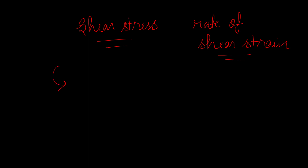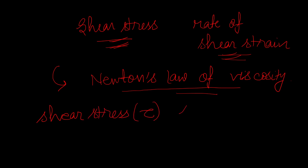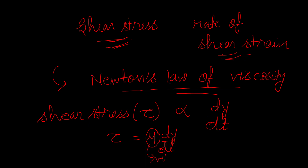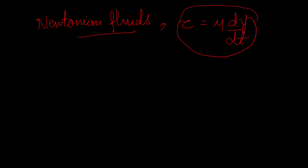The relationship between shear stress and the rate of shear strain depends on the fluid. Common fluids in nature obey Newton's law of viscosity, which states that shear stress tau is proportional to the rate of shear strain. Removing the proportionality sign introduces mu, the dynamic viscosity of the fluid. Such fluids are known as Newtonian fluids, for which tau equals mu times the rate of shear strain.